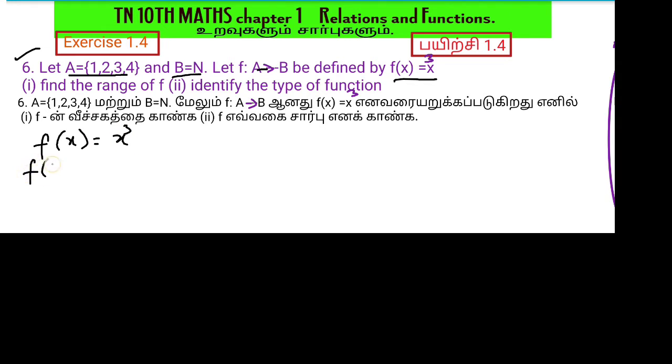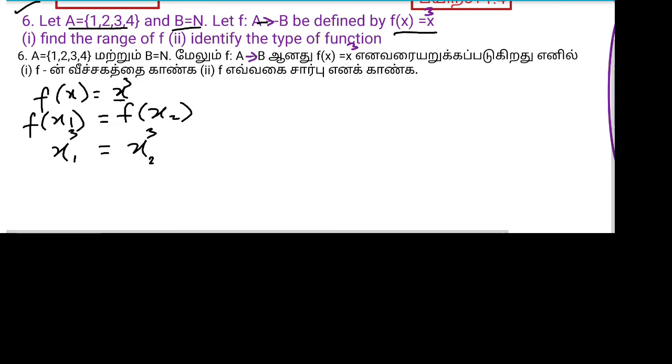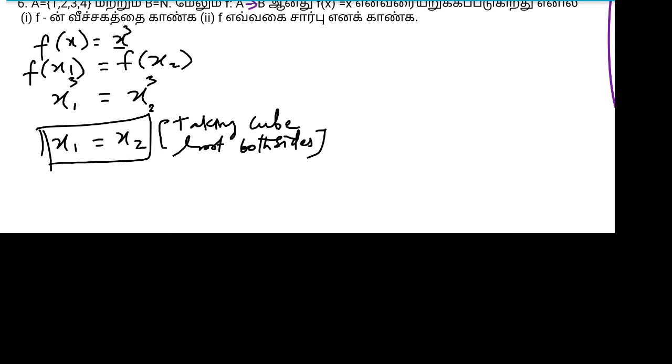Then, f of x1 equal to f of x2 gives x1 cube equal to x2 cube. Taking cube root both sides, we get x1 equal to x2, so it is a one-to-one function.